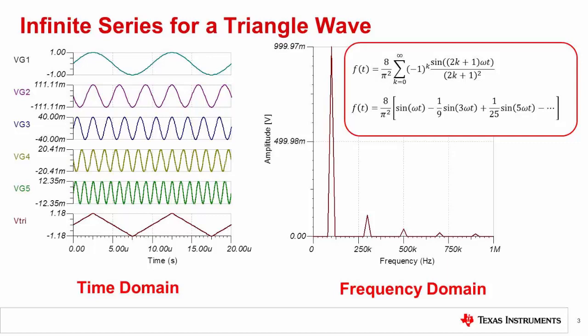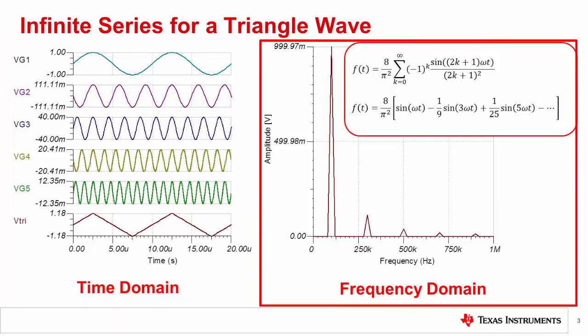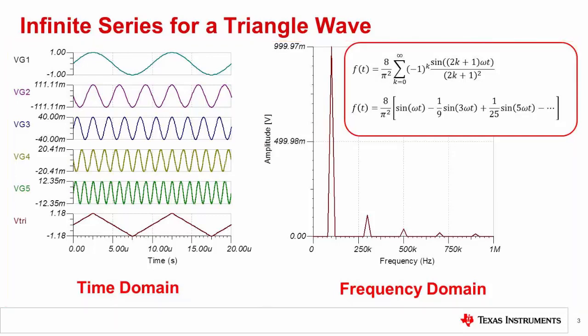However, practically, if you use the fundamental and several harmonics, you will get a pretty good representation of the triangle wave. This example shows a fundamental with four harmonics in both the time and frequency domain. Notice in the time domain waveform, the triangle waveform at the bottom is the direct sum of the waveforms above. The frequency domain of the triangle waveform is generated using a mathematical transformation called a Fourier transform, which is a general way to transform any time domain signal into its frequency domain equivalent.